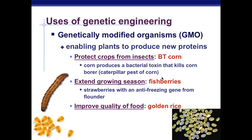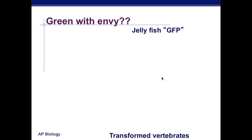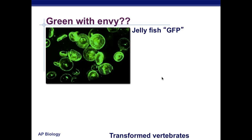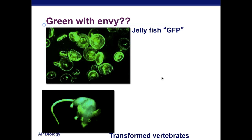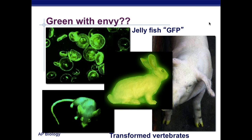You can also improve the quality of food. For example, you have rice, and then you have golden rice, which has the addition of vitamin A — giving more nutritional value. And, going green with envy: jellyfish have something called the glow gene, or green fluorescent protein. If you isolate it out, you can insert that and have transformed vertebrates — the glow gene in the rat, and the glow gene in the nose and in the hooves or paws of the pig, and the bunny.